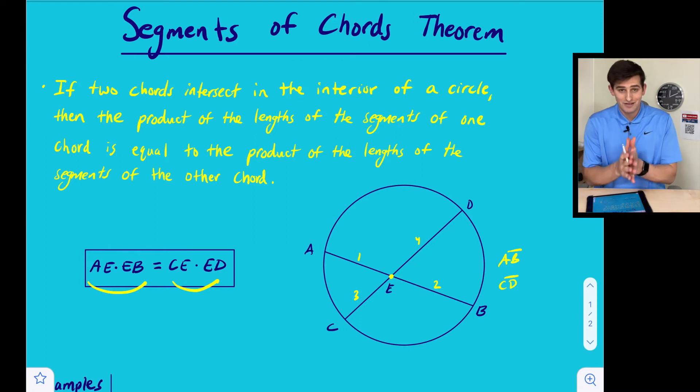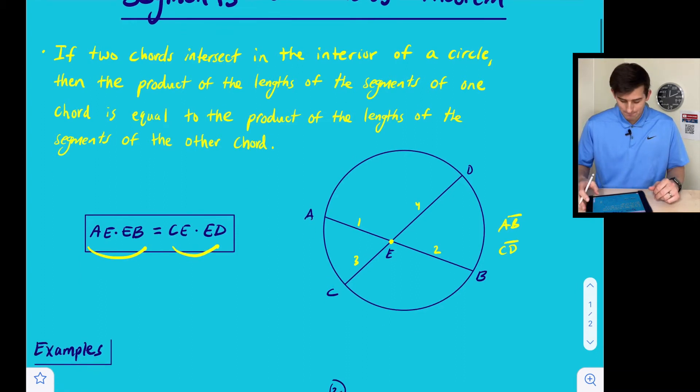So whenever we have two segments that are intersecting in the interior of a circle, we can just set their products equal to each other and solve for whatever we need.